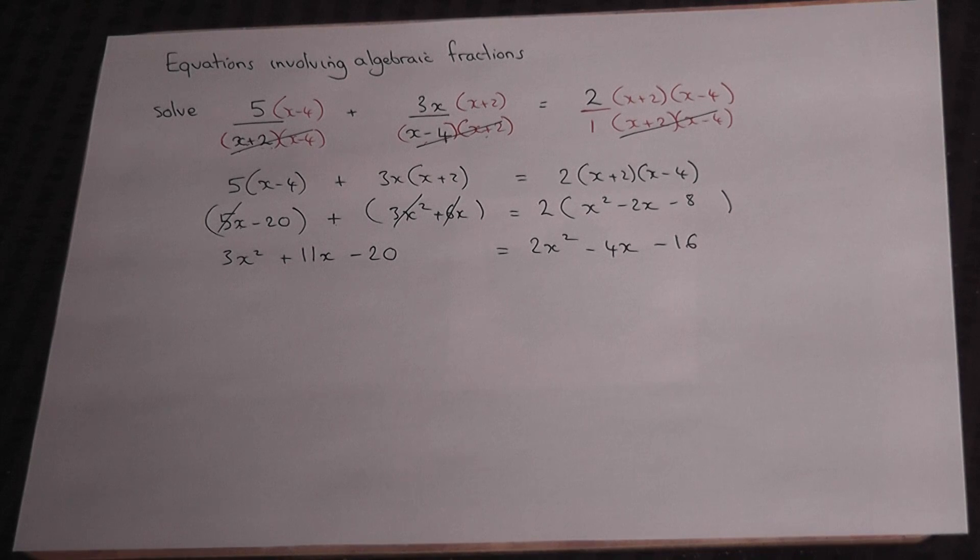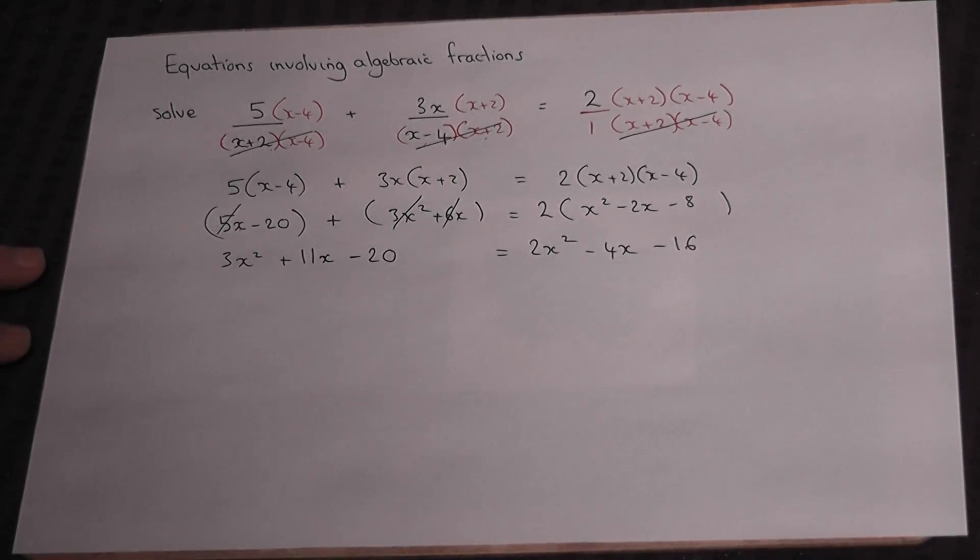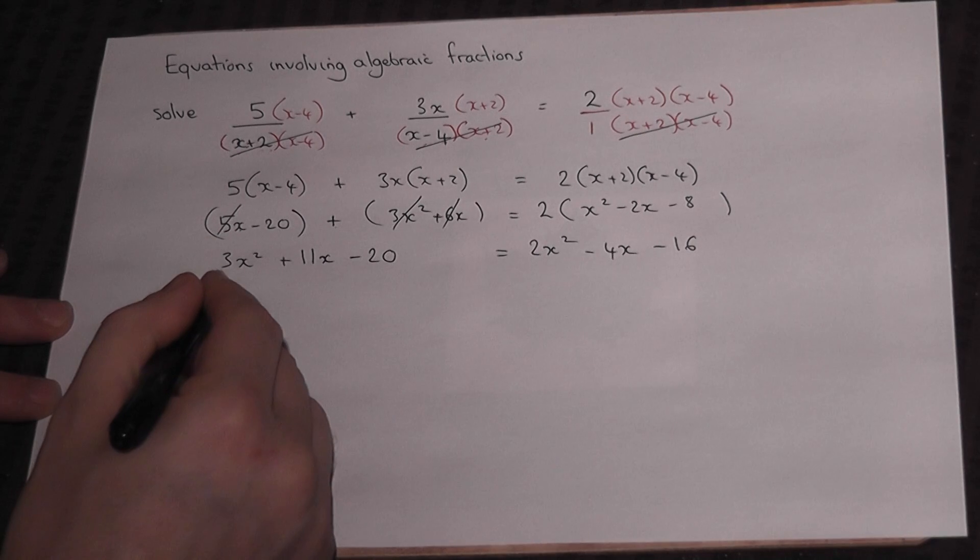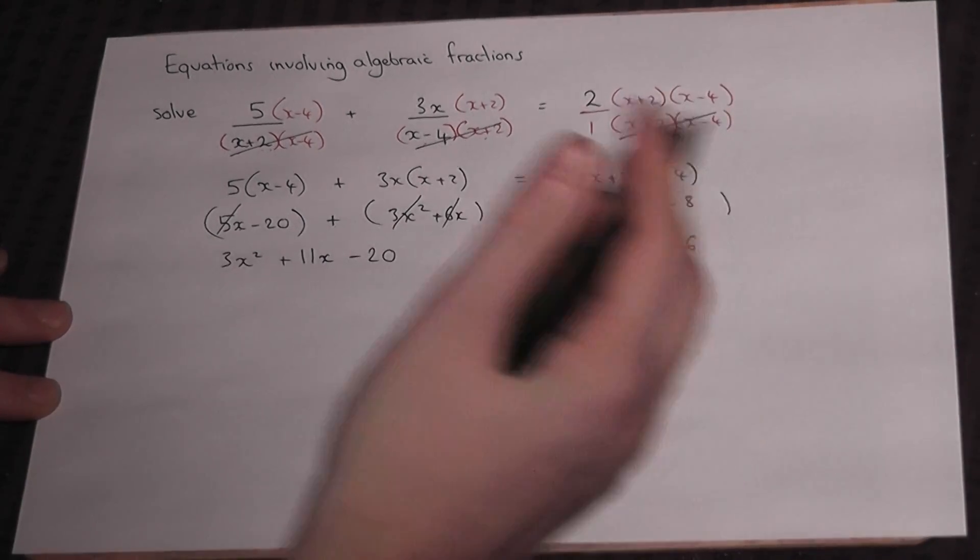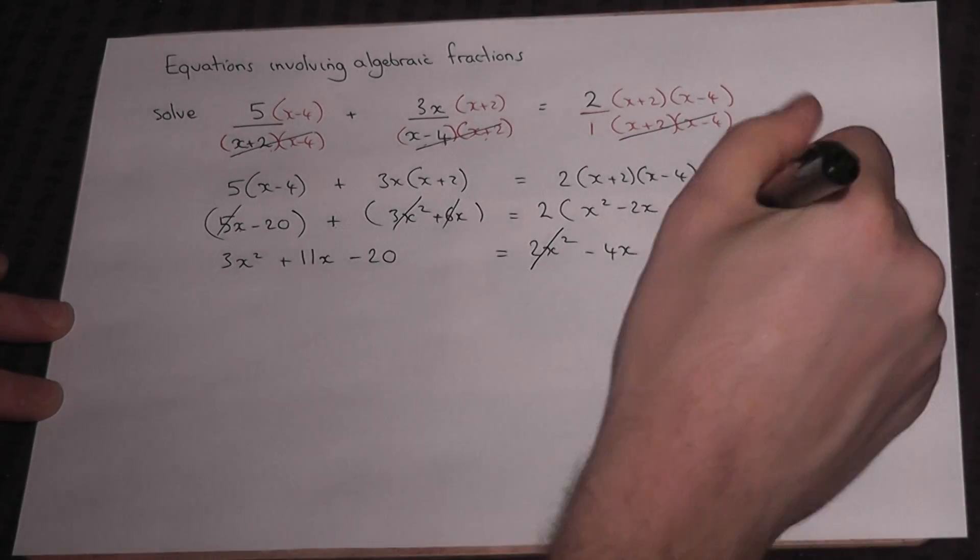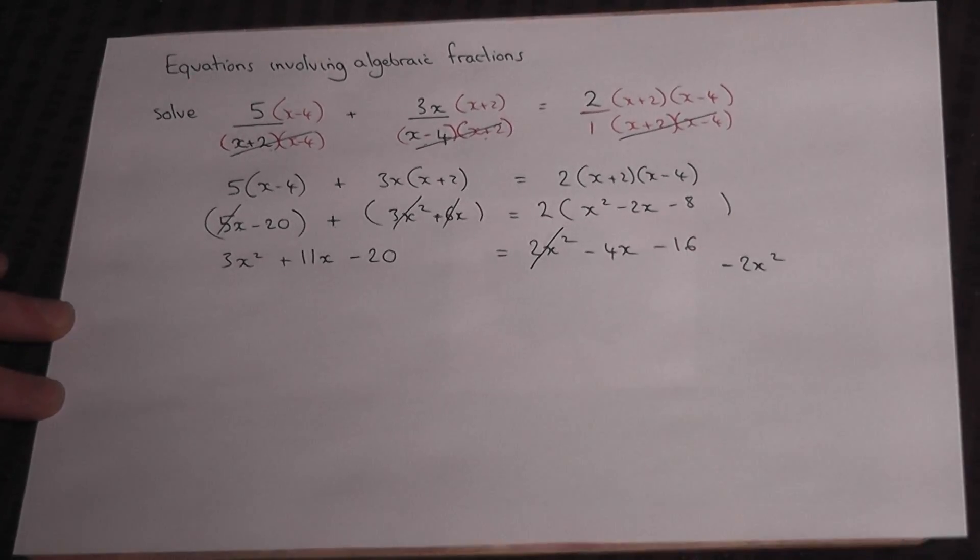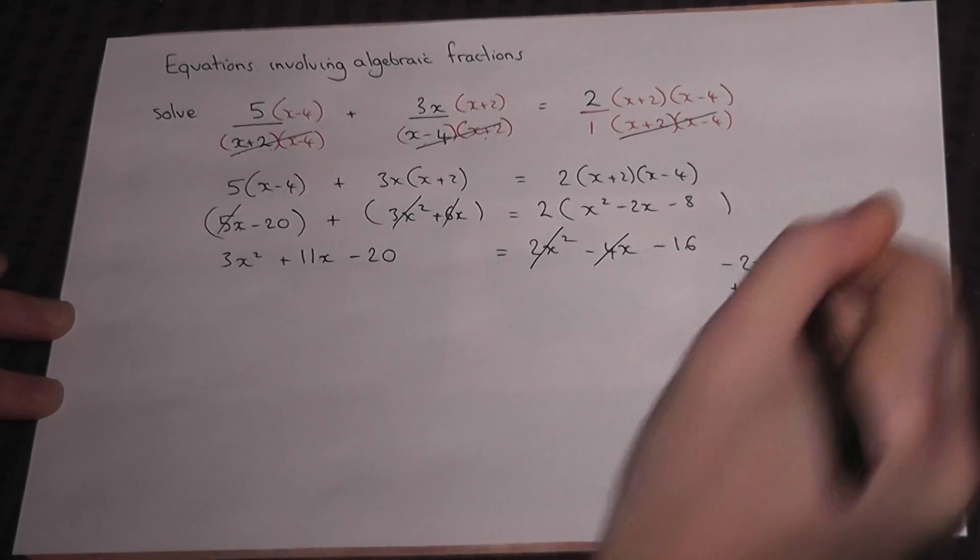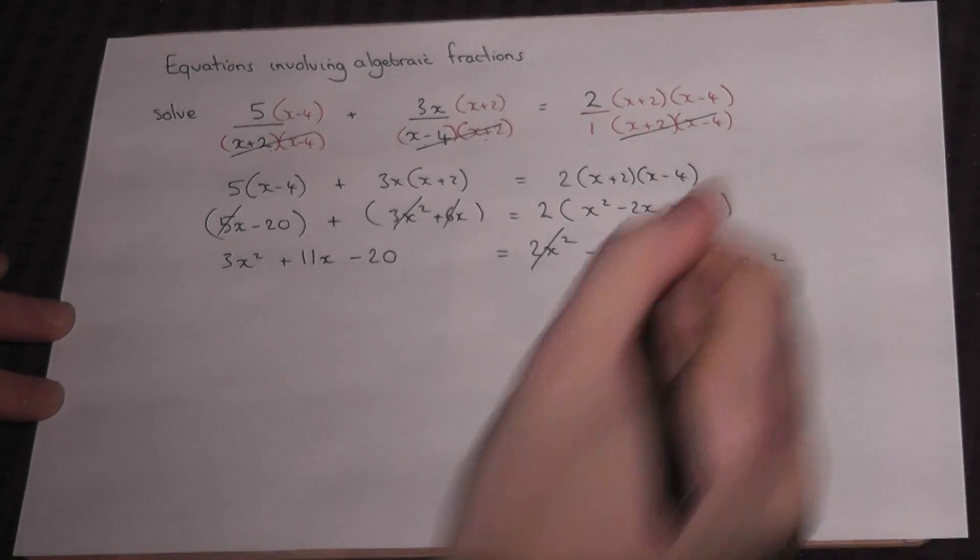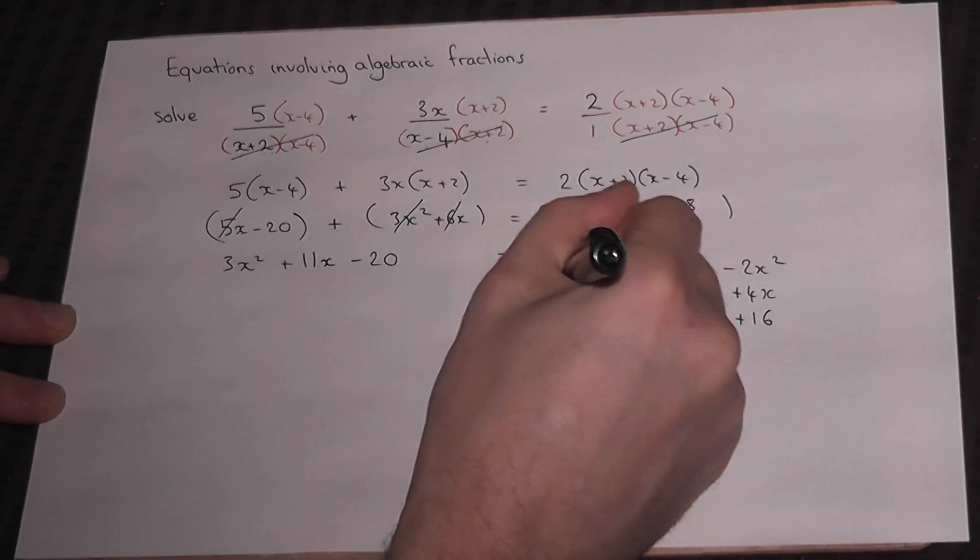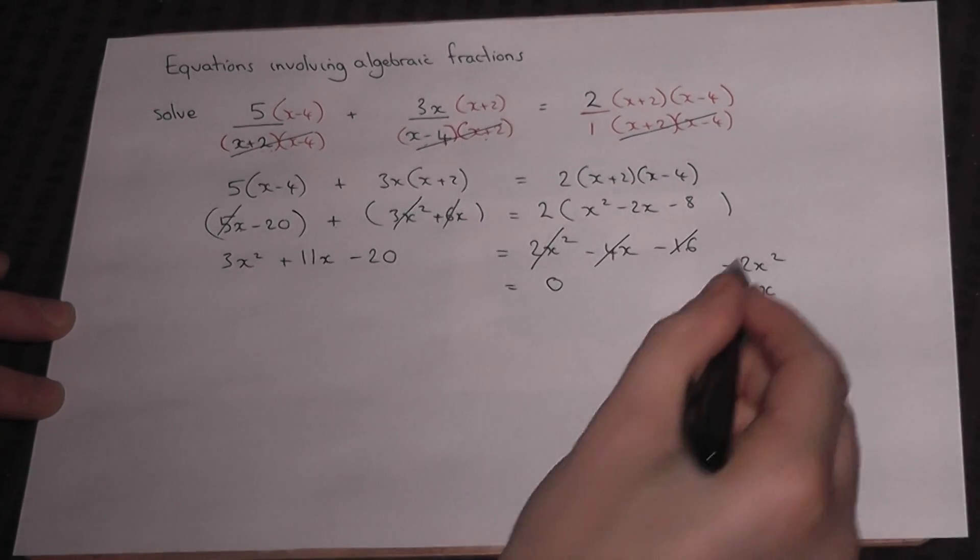The trick now is to get all terms to one side. Look for the highest x squared term, which is this one here. Let's get everything to the left. I don't want that there so I must take away 2x squared. I don't want that there so I add 4x. And I don't want that there so I add 16.